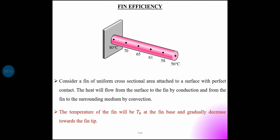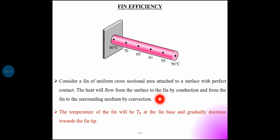First one: fin efficiency. Consider a fin of uniform cross-sectional area attached to a surface with perfect contact. The heat will flow from the surface to the fin by conduction and from the fin to the surrounding medium by convection.